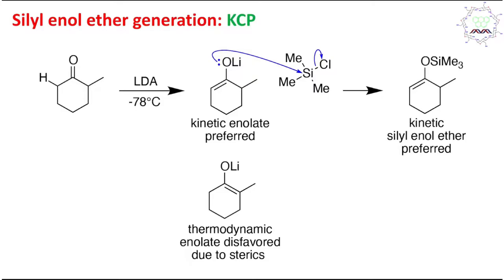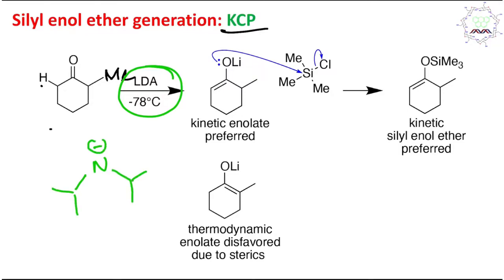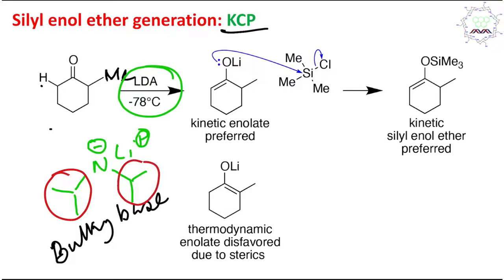So how can silyl enol ether be generated? There are two strategies. The first is KCP, or kinetically controlled product. Here, an unsymmetrical ketone — with a methyl on one side and a hydrogen on the other — is treated with LDA, lithium diisopropylamide. This is a selective proton-abstracting reagent, a bulky base. It cannot act as a nucleophile; because of its two isopropyl groups, it selectively abstracts the proton from the less hindered site.